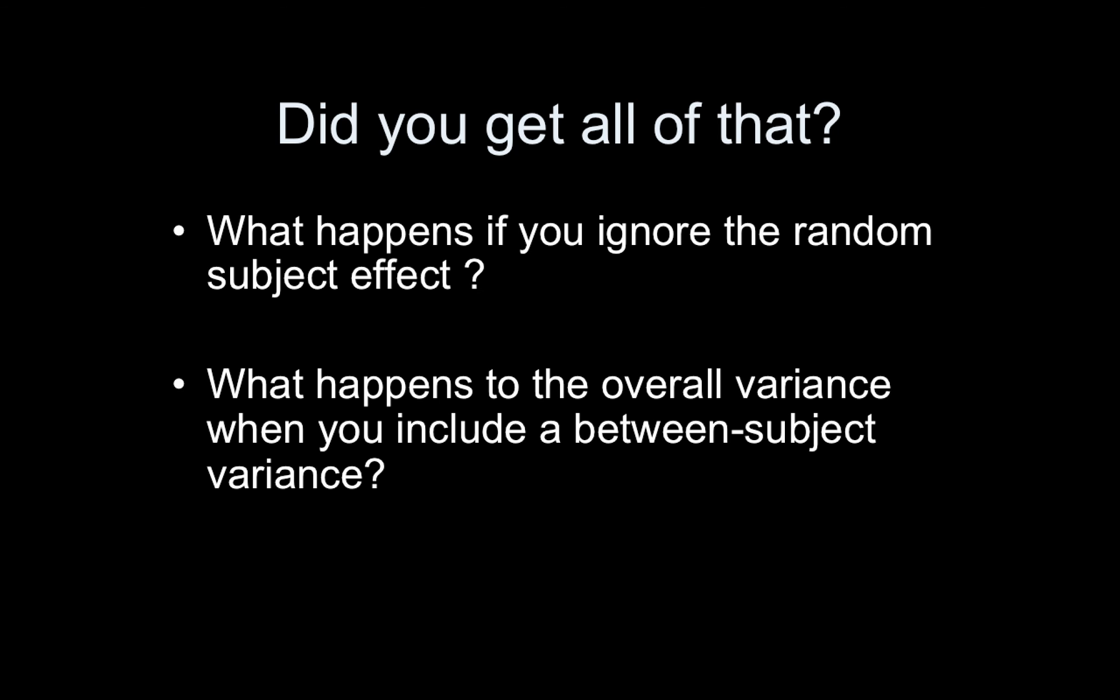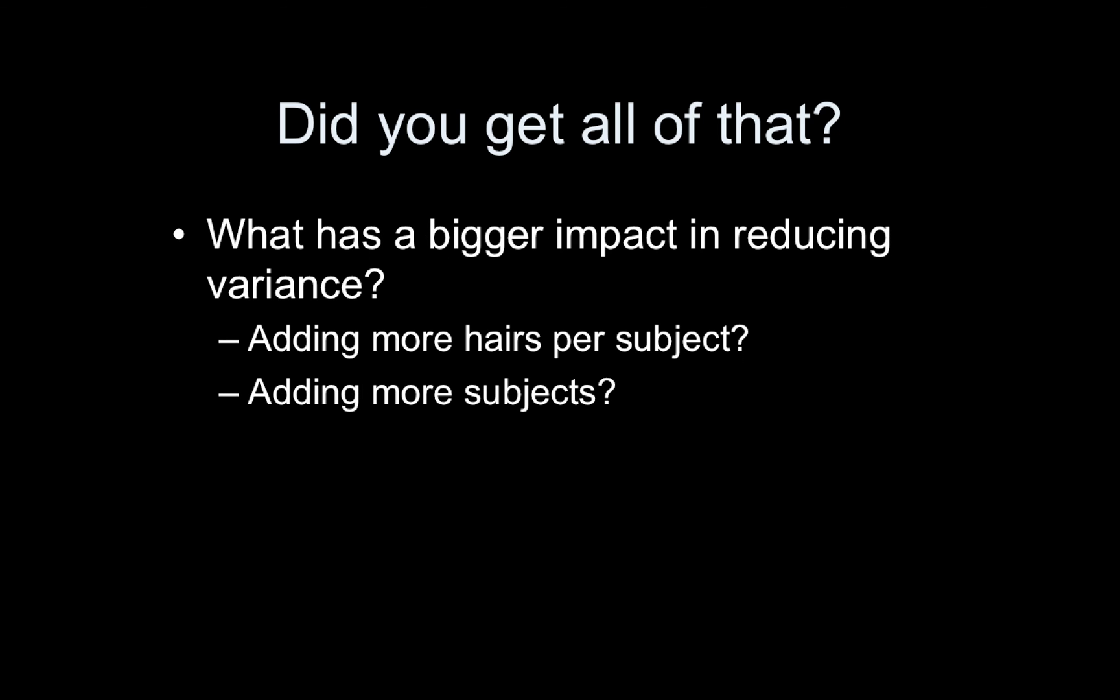Hopefully you got all that. What happens if you ignore the random subject effect? That's important to know. So if you do it by mistake, you don't get too excited. And what happens to the overall variance when you include a between-subject variance? This is directly related to the previous question. Basically, does it go up or does it go down and why? And what has a bigger impact in reducing the overall mixed effects variance? Adding more hairs per subject or adding more subjects.